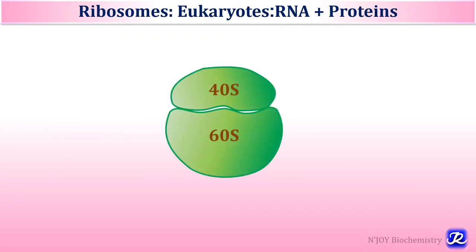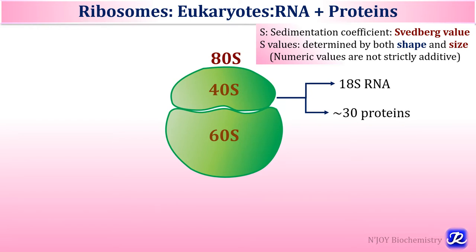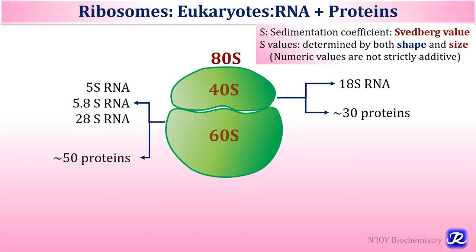The eukaryotic ribosome is made up of two subunits: the smaller one is 40S and the bigger one is 60S, and together it is called the 80S ribosome. This S represents sedimentation coefficient, also called the Svedberg value, which is determined by both shape and size, which is why the numeric values are not strictly additive. The smaller 40S subunit is made up of 18S ribosomal RNA and about 30 proteins, while the larger 60S subunit is made up of 5S, 5.8S and 28S ribosomal RNA along with around 50 proteins.